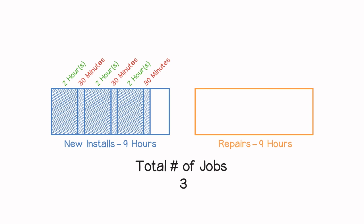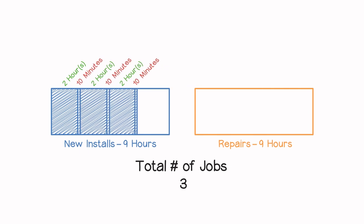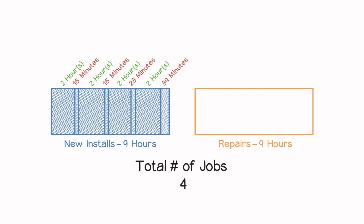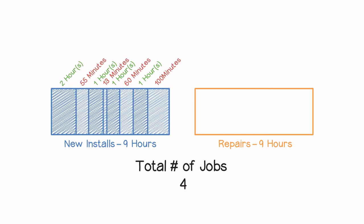However, in reality, the three customers that wanted new installs are all located within 10 minutes of each other. So when a fourth customer calls for a new install — even if she is 30 minutes away — the system will automatically schedule the task in the same window, and you can fully utilize your resources.